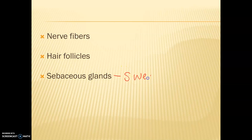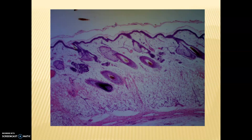Other things found in our dermis include nerve fibers, hair follicles, sebaceous glands, and sweat glands. To clarify: sebaceous glands actually produce sebum, which is a little different from sweat, but we do also have sweat glands in the dermis, along with blood vessels. Looking at this picture of our entire skin layer, the very dark purple up top is our epidermis, and all of the layer below that is our dermis. We can see a root hair here, a sebaceous gland usually incorporated with the hair follicle, and other glands in the tissue.